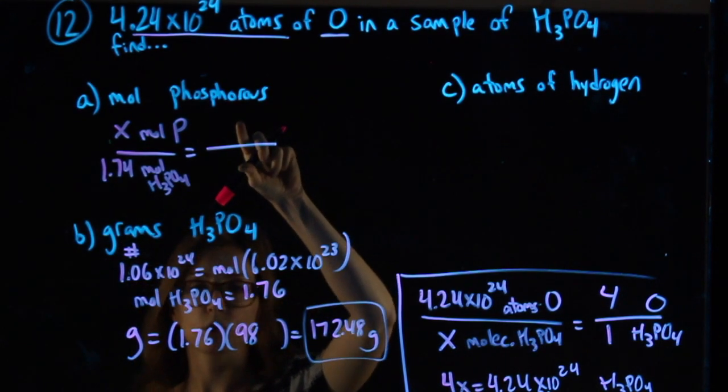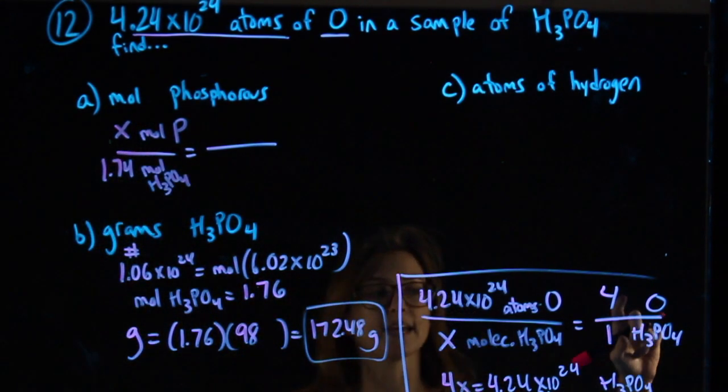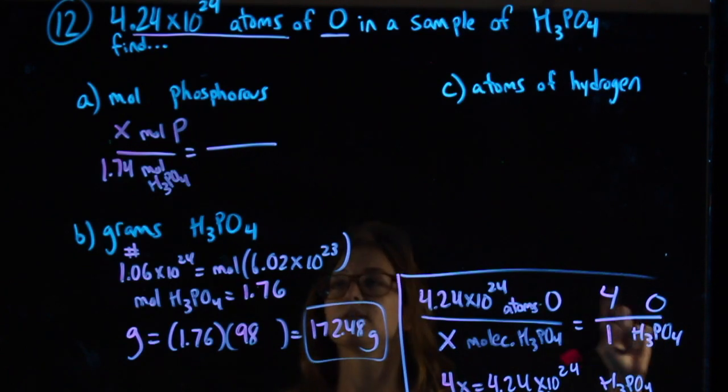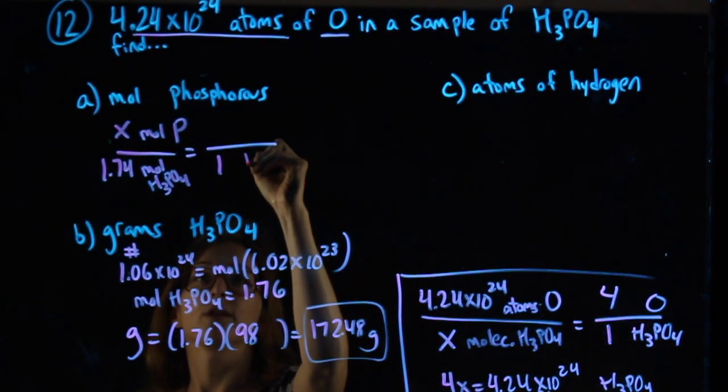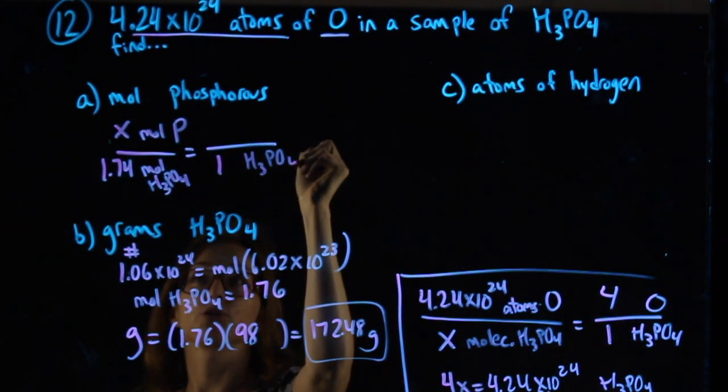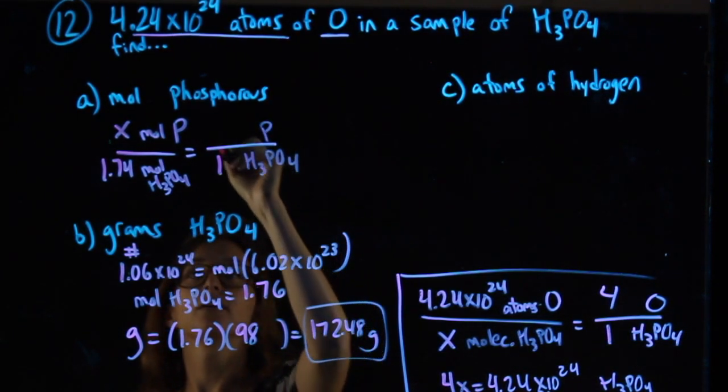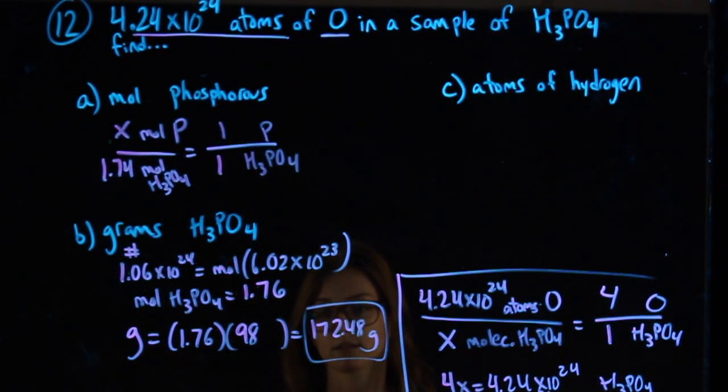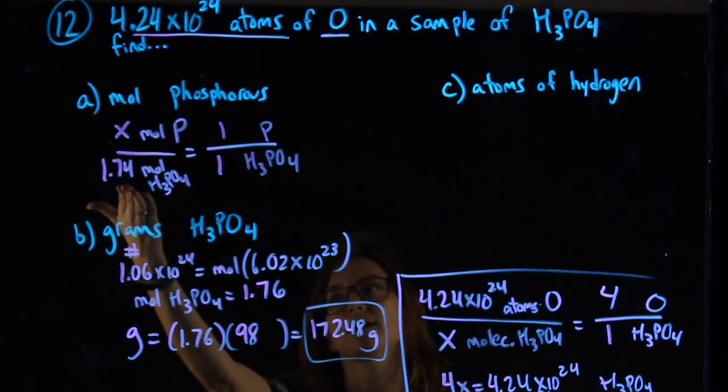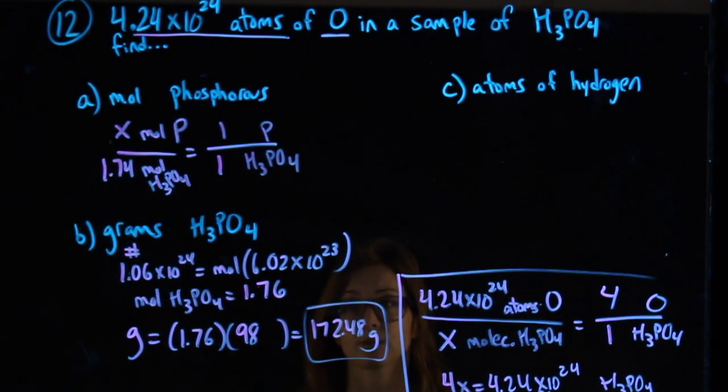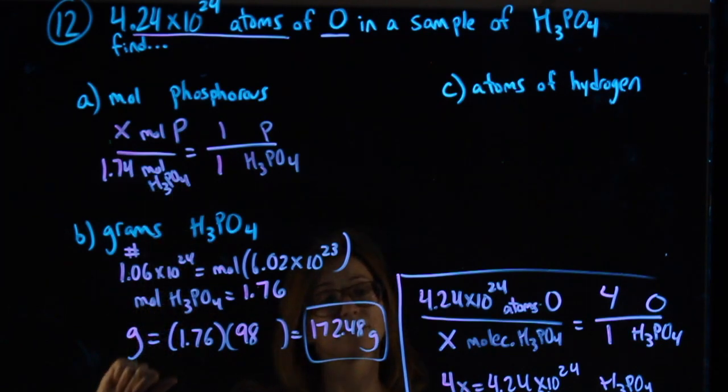This side of the proportion for moles is the same as we used earlier, where I asked myself, okay, well, in one molecule of H3PO4, how many P's are there? Just one. So that's why when I cross-multiply this, I end up getting 1.74 as my answer. Done with A.